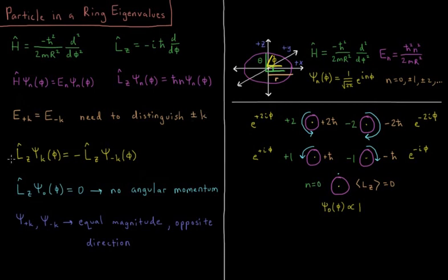The Lz operator acting on psi of k is equal to the opposite result of the Lz operator acting on psi minus k. Since the result is h-bar n, if n is 1, we get h-bar psi n. If it's minus 1, we get minus h-bar psi n. So we can distinguish the plus k and minus k states by their angular momentum around the z-axis values. Effectively, one of them is traveling around the z-axis in one direction, and the other is traveling around in the other.